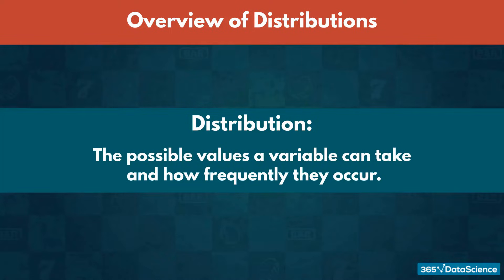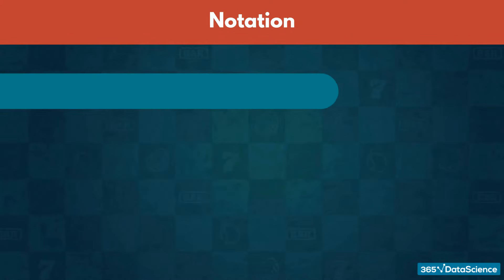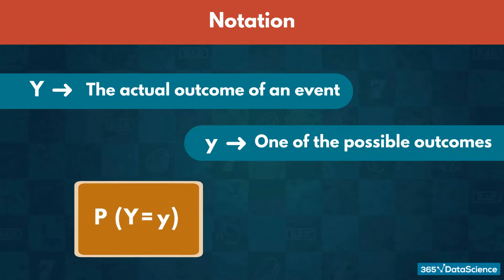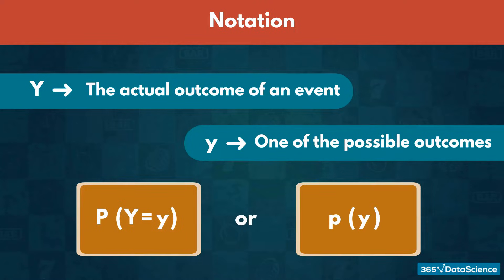Before we start, let us introduce some important notation we use for the remainder of the course. Assume that uppercase Y represents the actual outcome of an event, and lowercase y represents one of the possible outcomes. One way to denote the likelihood of reaching a particular outcome Y is P of Y equals y. We can also express it as P of y.